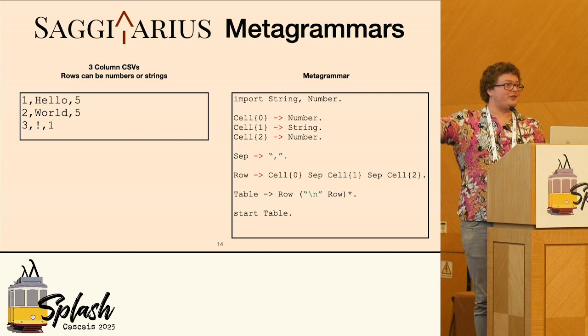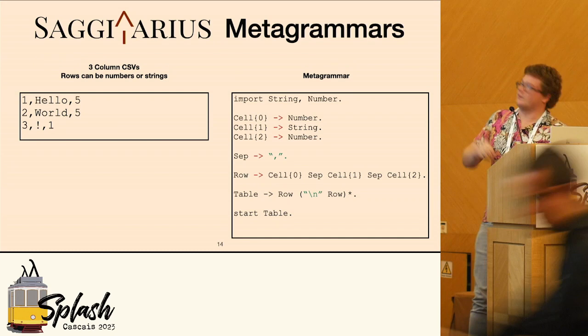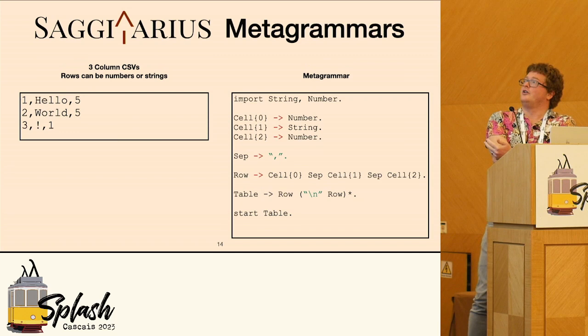But there's an issue. This is a grammar that accepts three-column CSVs like this, where it goes number, string, number. But I might want to do something like number, number, string. That can't be handled here.